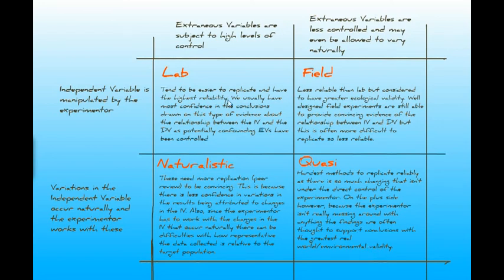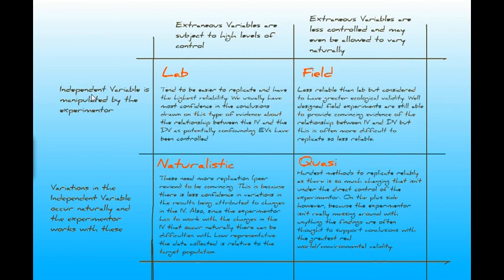Those are your four basic types of experiments: lab, field, naturalistic, and quasi. Which one you're in has nothing to do with wearing lab coats or being outside — it's literally to do with the answers to these two questions: are you exercising a lot of control over extraneous variables, and are you manipulating the IV or allowing it to vary naturally? And that's the size of it.